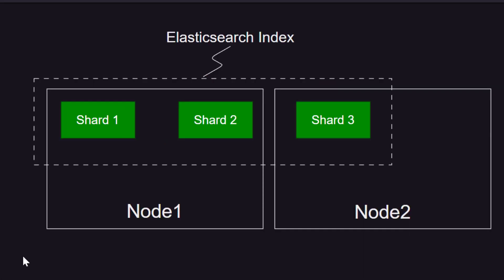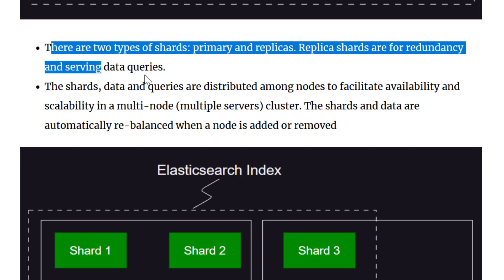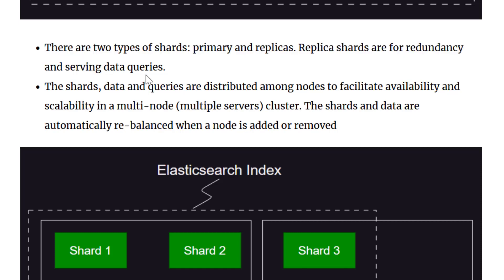For example, if you configure an index to have three shards and have two nodes in the cluster, Elasticsearch will rebalance the shards distributed among the nodes. When a query comes in, both nodes can work on it in parallel. So using multiple shards across multiple nodes, you achieve parallel queries. The number of shards is configurable — you can even have one shard. There are two types of shards: primary and replicas. Replica shards are read-only and useful for serving parallel data queries.